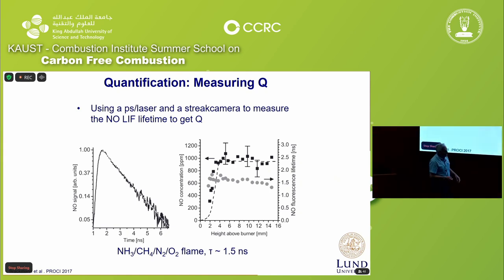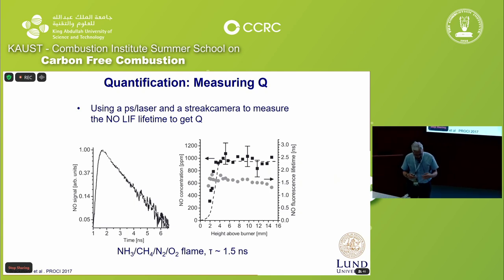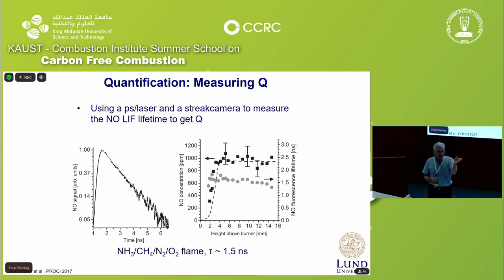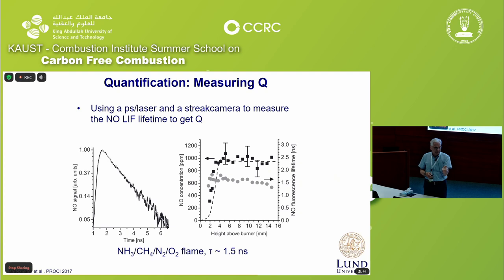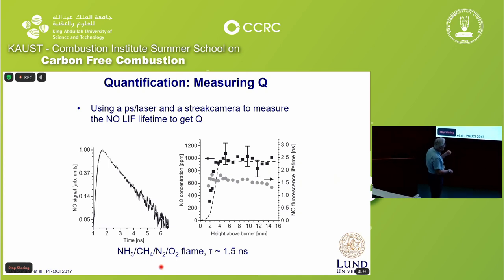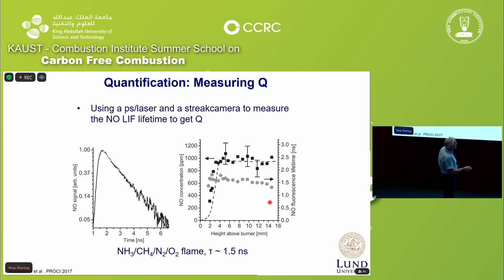Looking at the rate equation, the decay is actually the quenching constant. That means you need a laser which is short on the picosecond scale, and you measure the fluorescence lifetime. In an ammonia-methane flame, this is how the decay looks. The fluorescence lifetime is on the order of one and a half nanoseconds, and using that you can convert the signal to number densities.